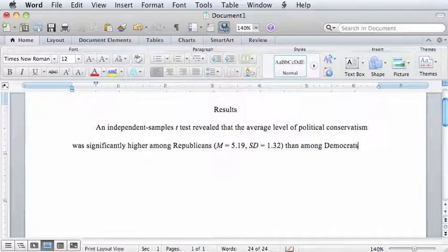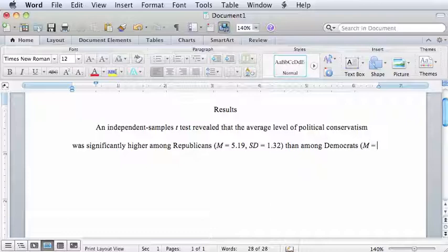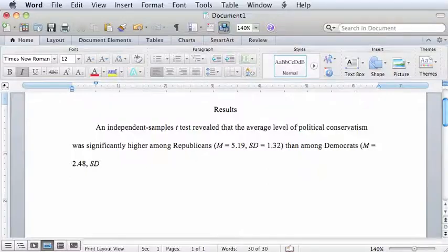Paired samples t-tests are used if the two groups are the same people, such as a pre-test, post-test. But independent samples is used if they are two separate groups, such as men and women.